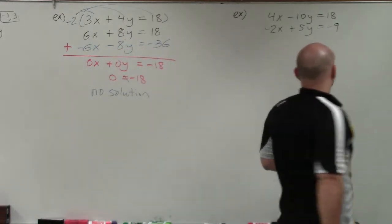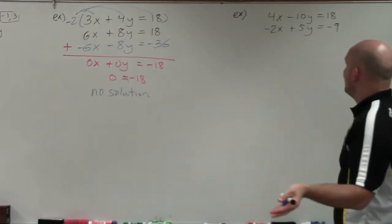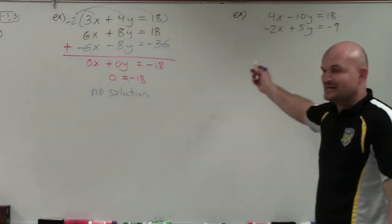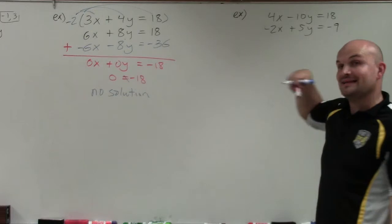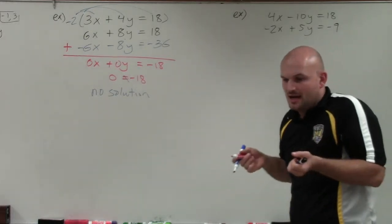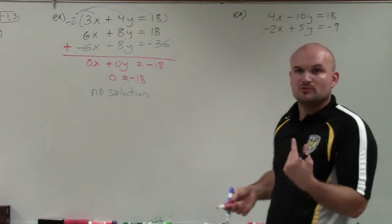So now let's get into the next example here. Again, we don't have any coefficients that's 1, otherwise I'd use substitution. But we want to use elimination. Neither any of the coefficients are the same. So again, I have to look into which variable is going to have the easiest common multiple that I can just multiply by a multiplier.